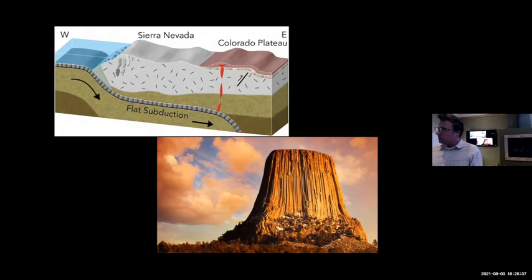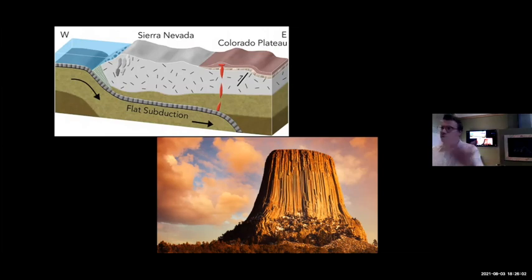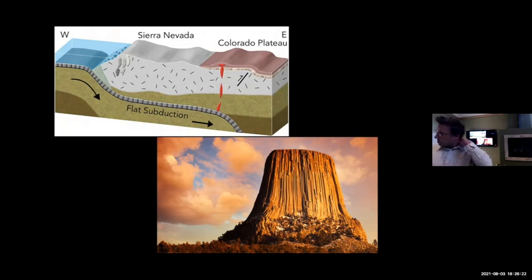It started about 90 million years ago, when continental arcs like the Sierra Nevada start to shut down. Magmatism slowly moved east through time, reaching its maximum extent around 45 to 40 million years ago. It's very bizarre to have magmatism in places like eastern Wyoming or central Texas, very far away from the plate margin. We know something very unusual was going on, especially since we had almost 200 million years of the arc staying relatively stationary.